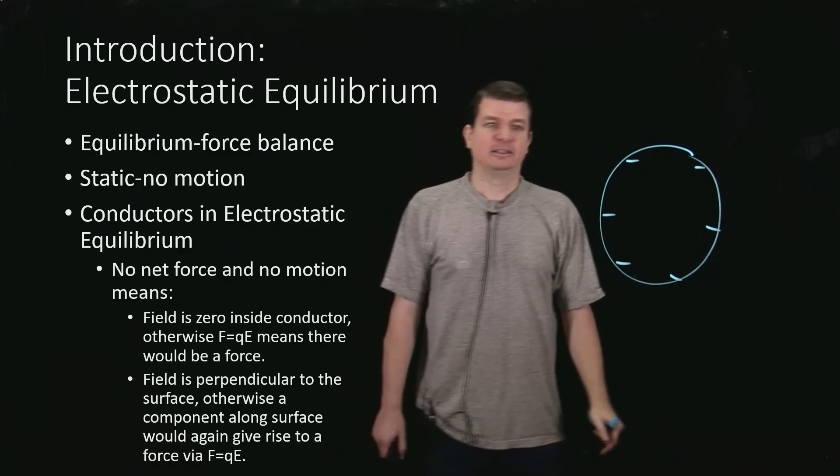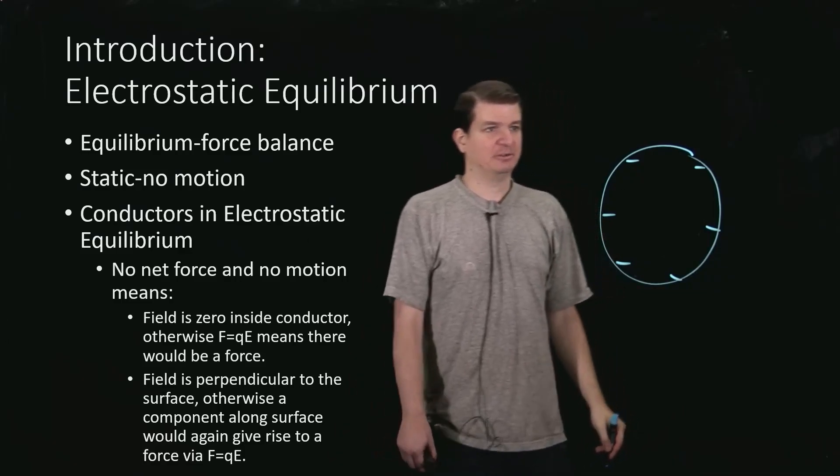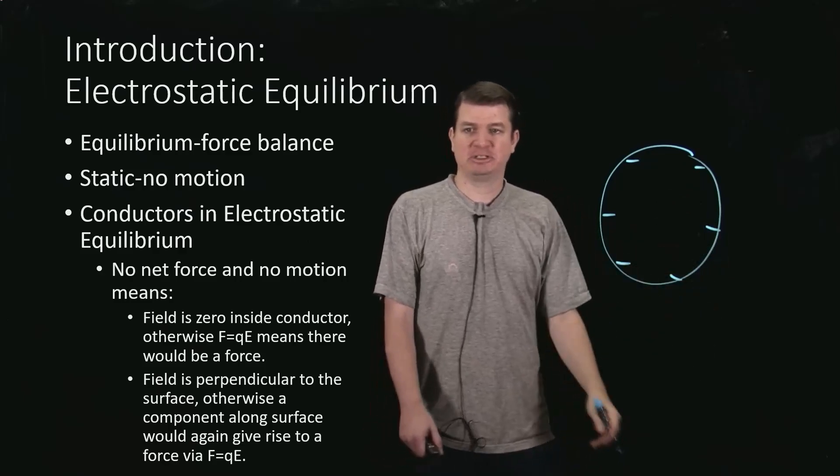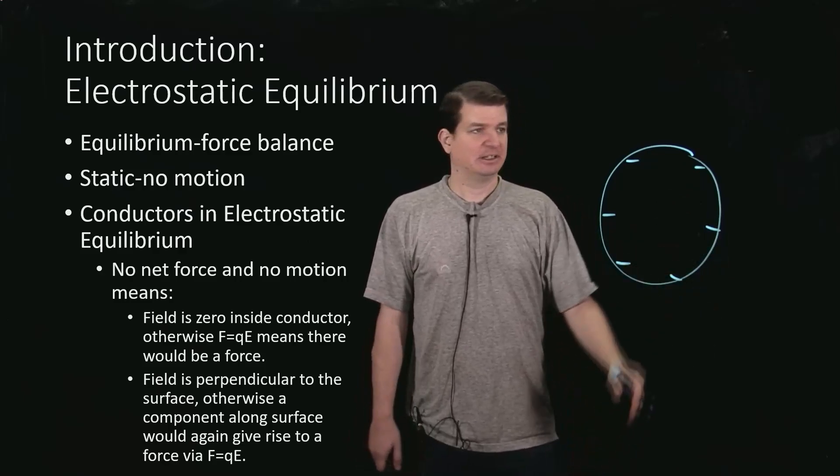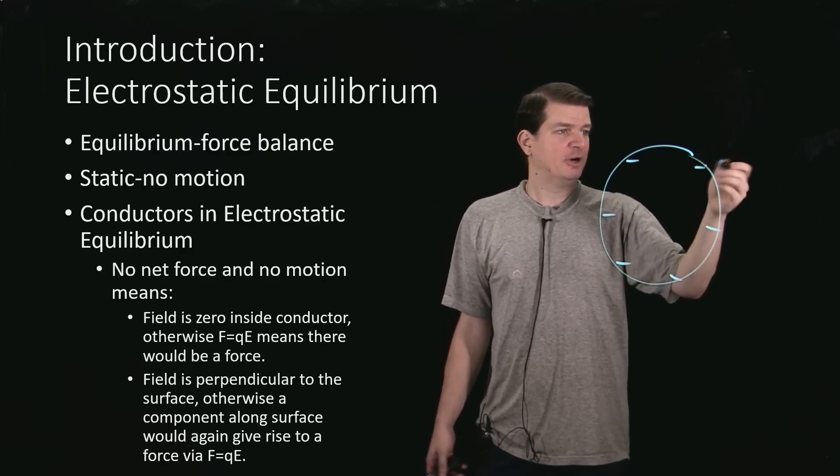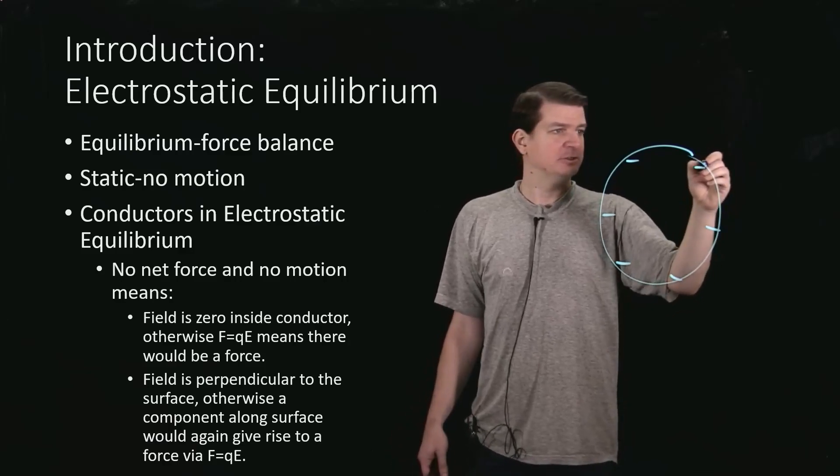Now, what else must be true? It turns out that the field just outside the conductor has to be perpendicular to the surface of that conductor. So why is that? Well, if the field were not perpendicular, so there's a well-behaved perpendicular one,